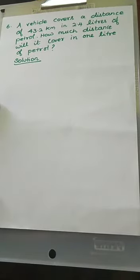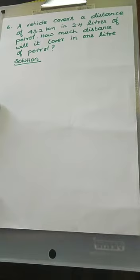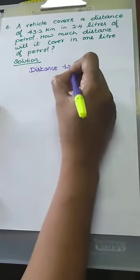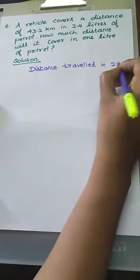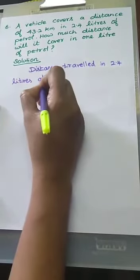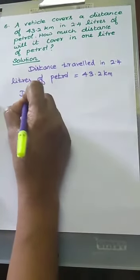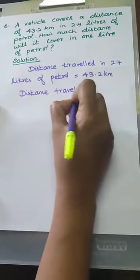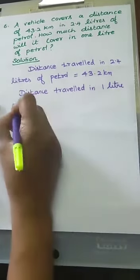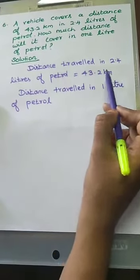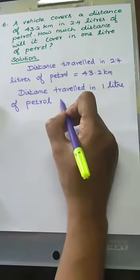Next problem: A vehicle covers a distance of 43.2 km in 2.4 litres of petrol. How much distance will it cover in 1 litre of petrol? One detail is given and we have to calculate the distance travelled in 1 litre of petrol. Distance travelled in 2.4 litres of petrol is equal to 43.2 km. So to find the distance in 1 litre, we divide the value.